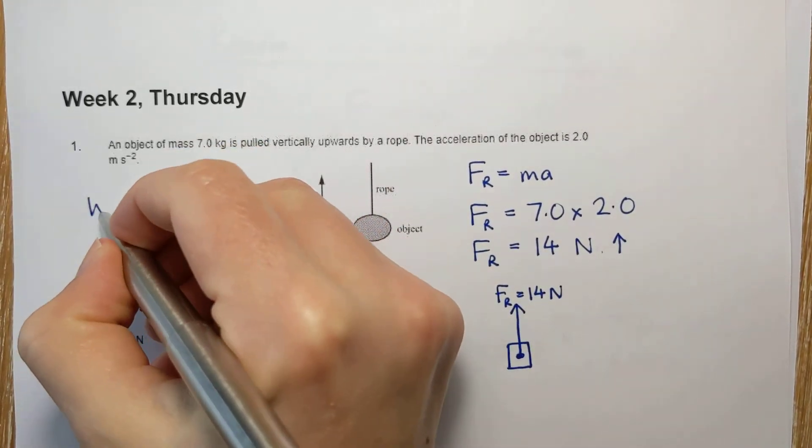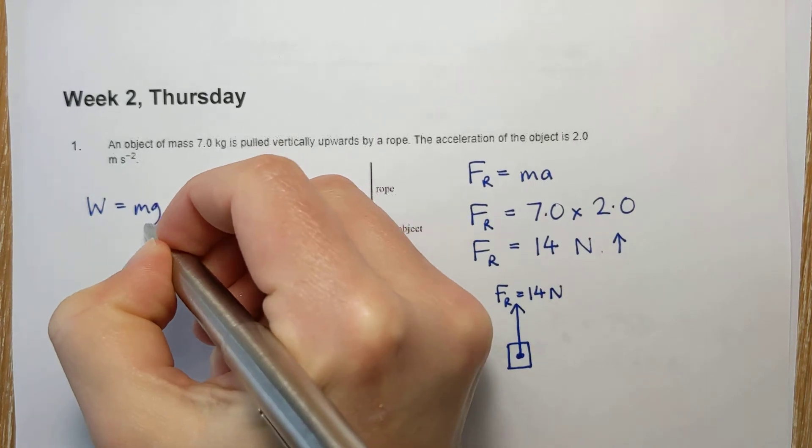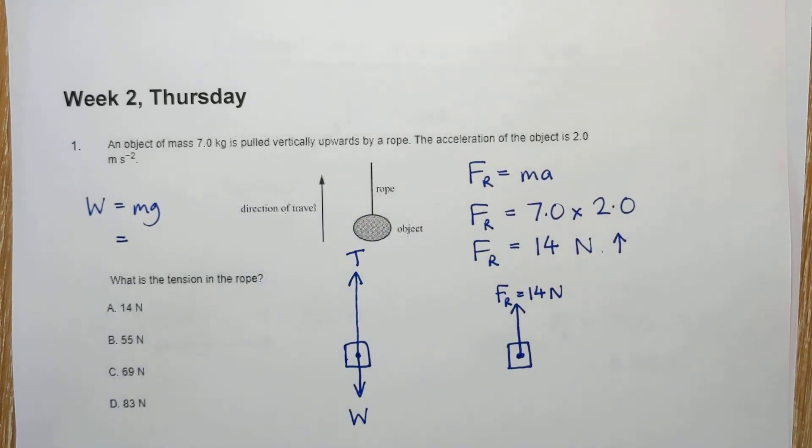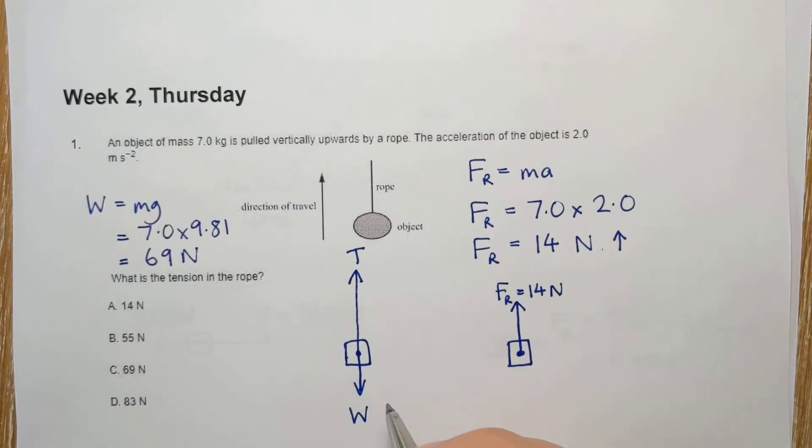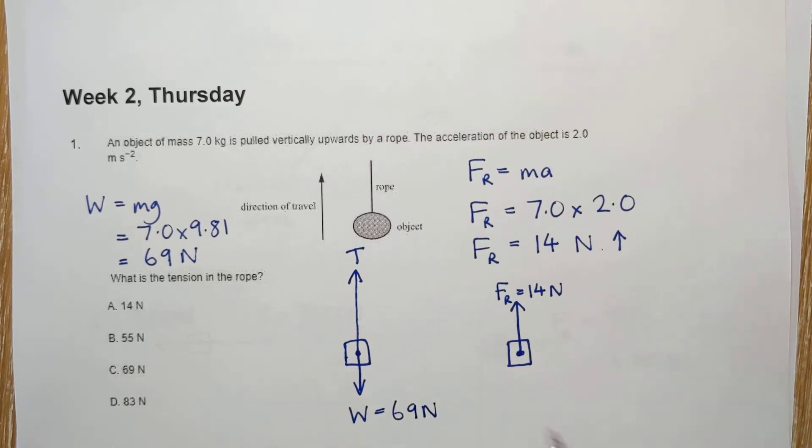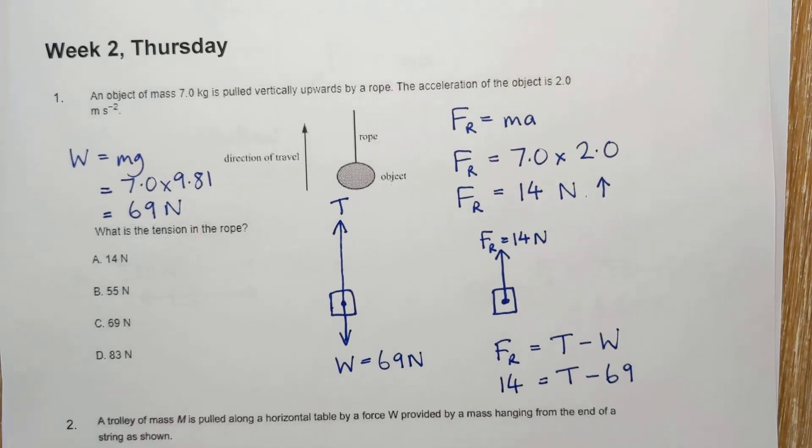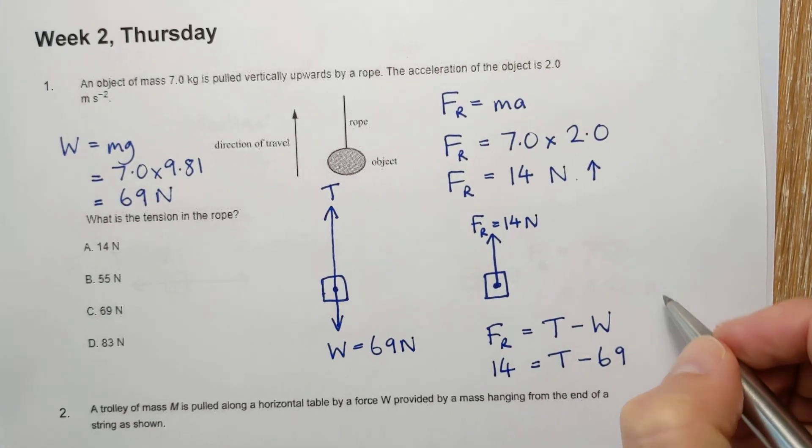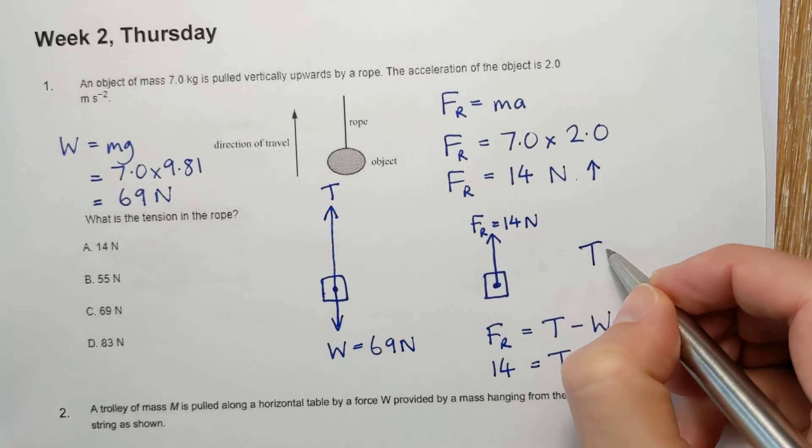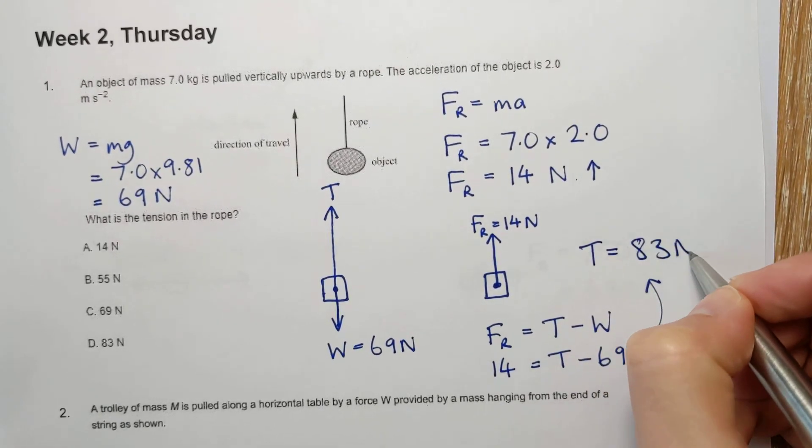Now, we do have to calculate W, we're not told it, we have to calculate it using the formula, and so the weight comes out as 69 newtons. So what I can write now is that I know that the resultant force is the tension minus the weight, and so 14 equals T minus 69, and we're not out of room, that gives us T equals 83 newtons.